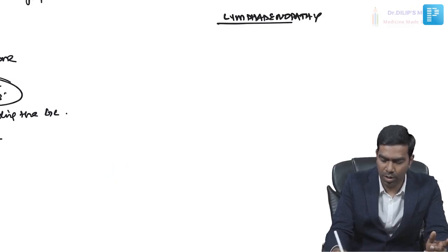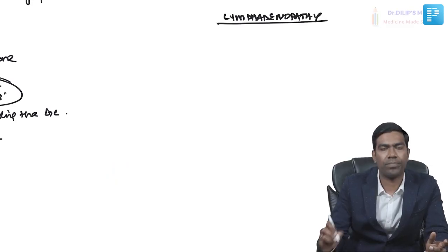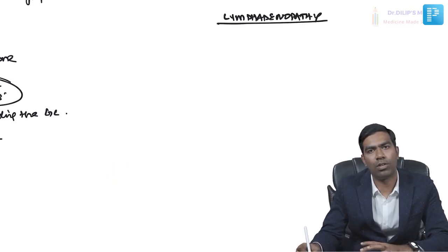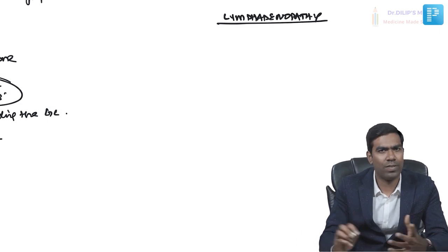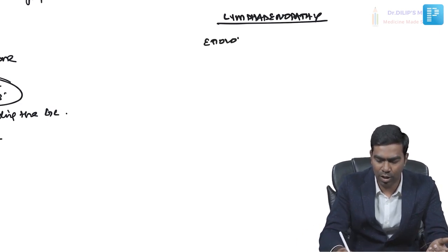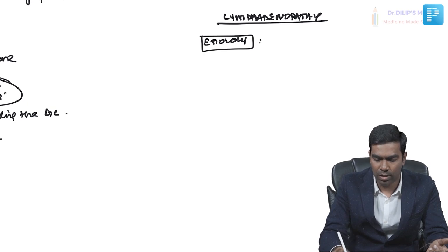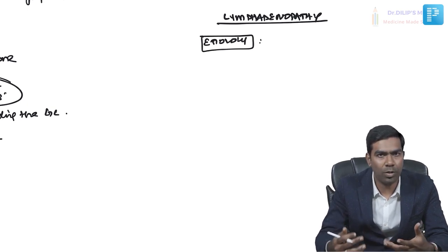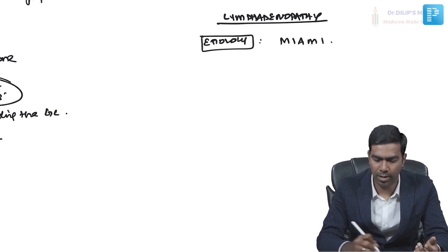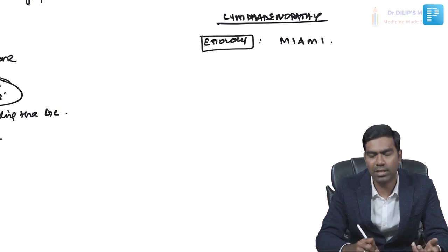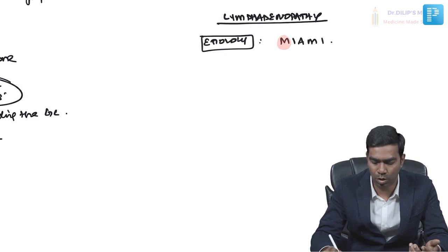Let us finish off some of the important aspects of lymphadenopathy. First, the most important thing they will ask you is the etiology of lymphadenopathy. When you want to know about the etiology of lymphadenopathy, I used to give it by a criteria called the MIAMI criteria. MIAMI is the mnemonic I use, and many standard textbooks also give this mnemonic.